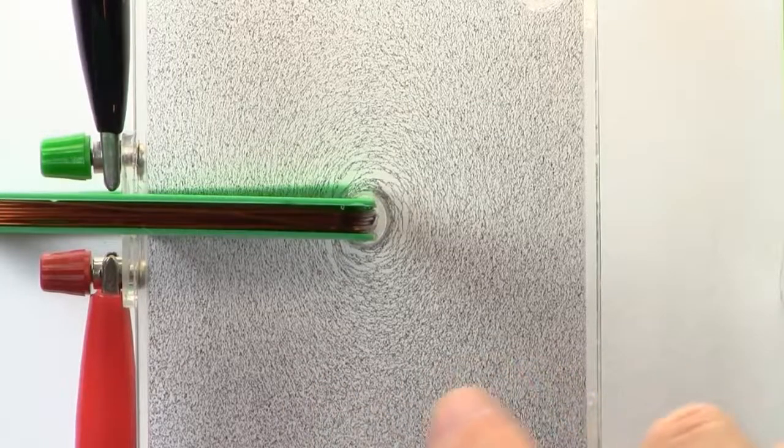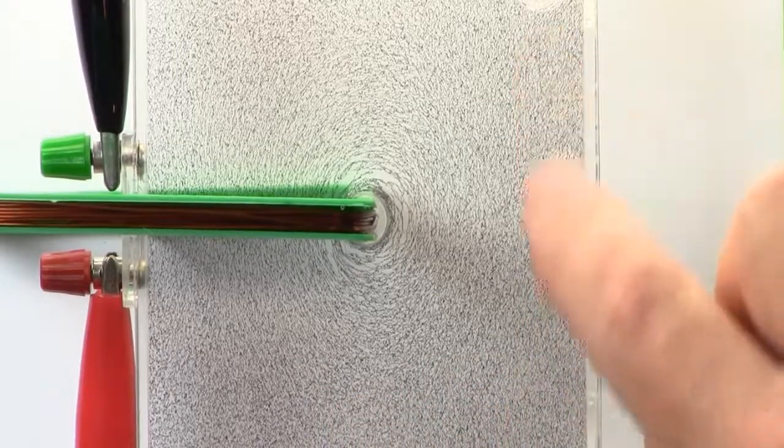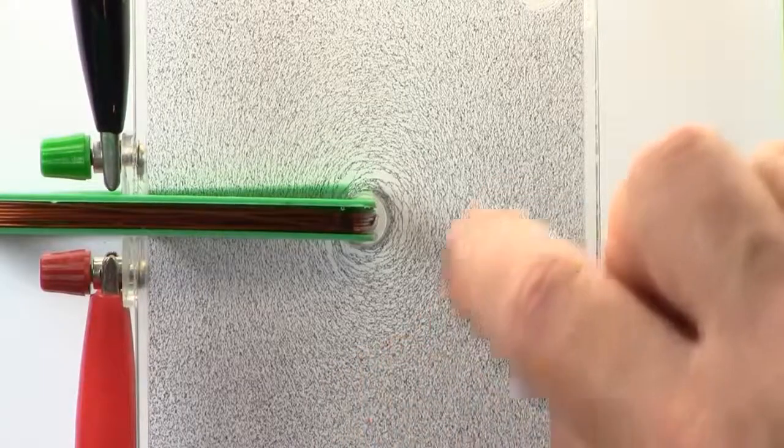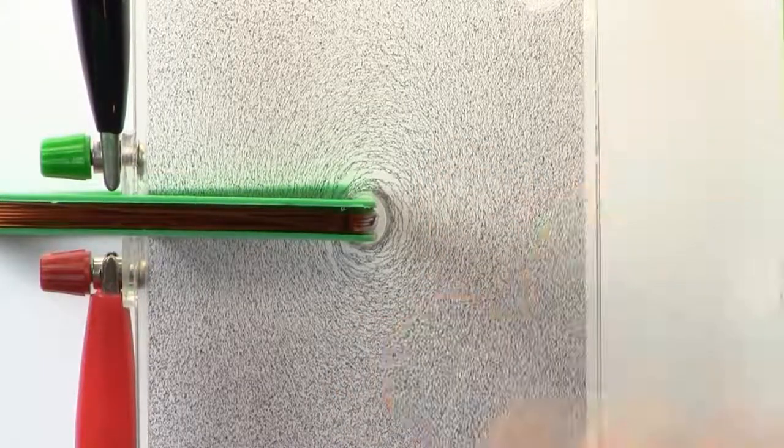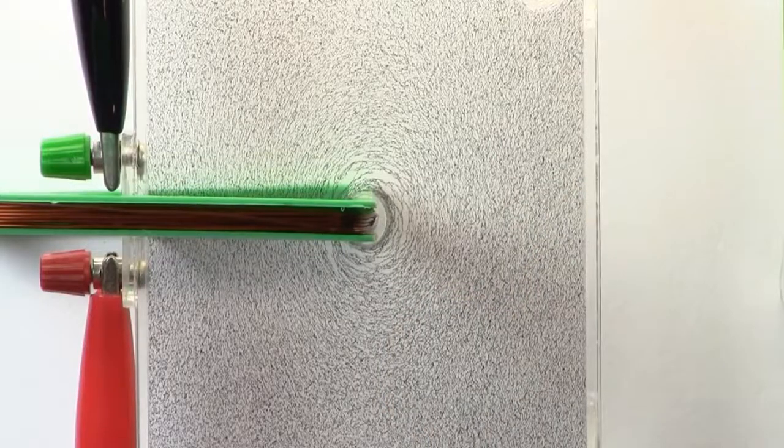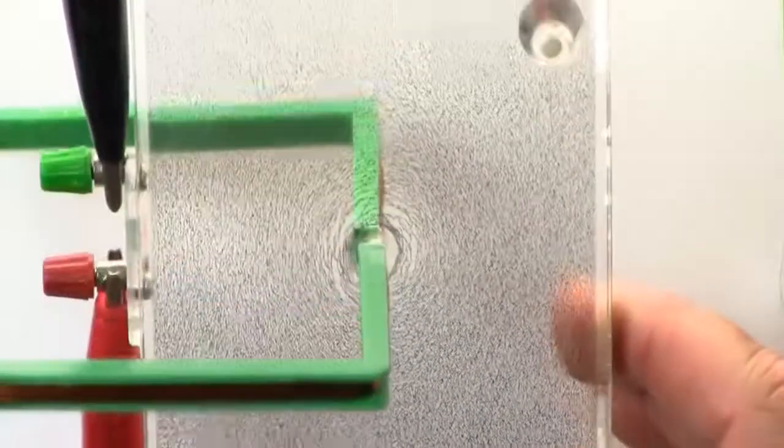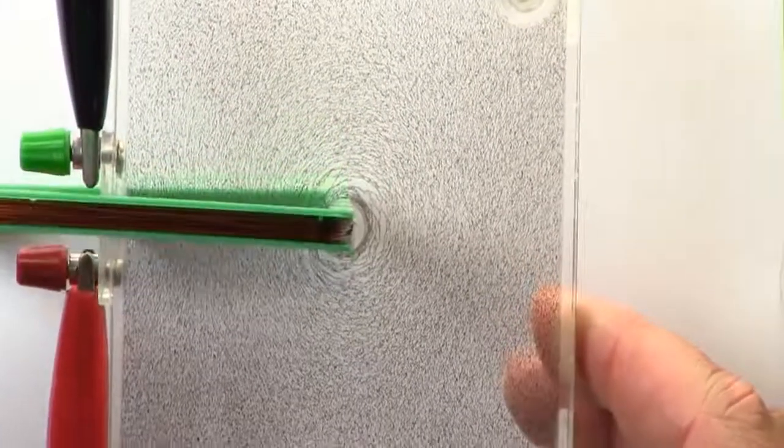So we can see that the iron powder further out is still pretty evenly dispersed, but as we move in closer, we start to see it form circles around the copper wire that's running through the center there.